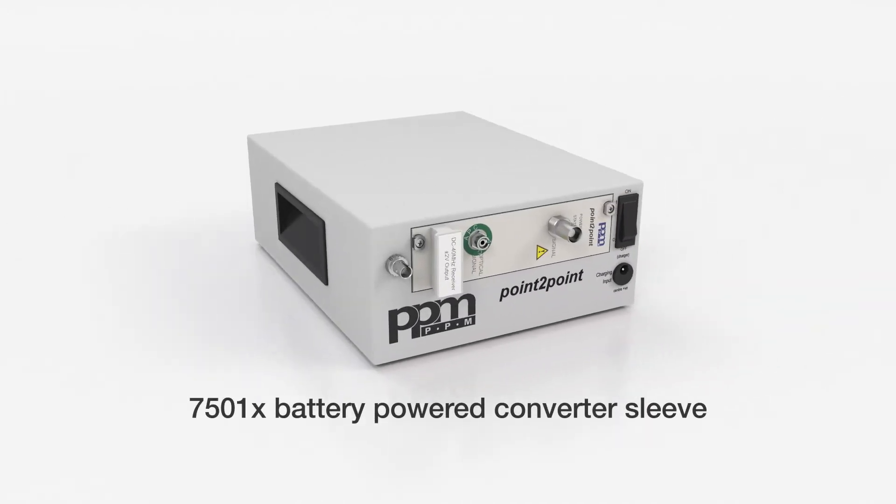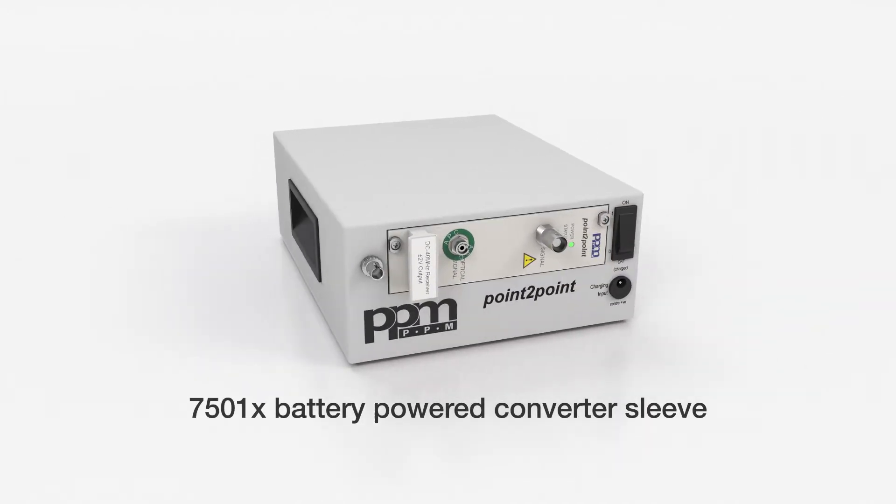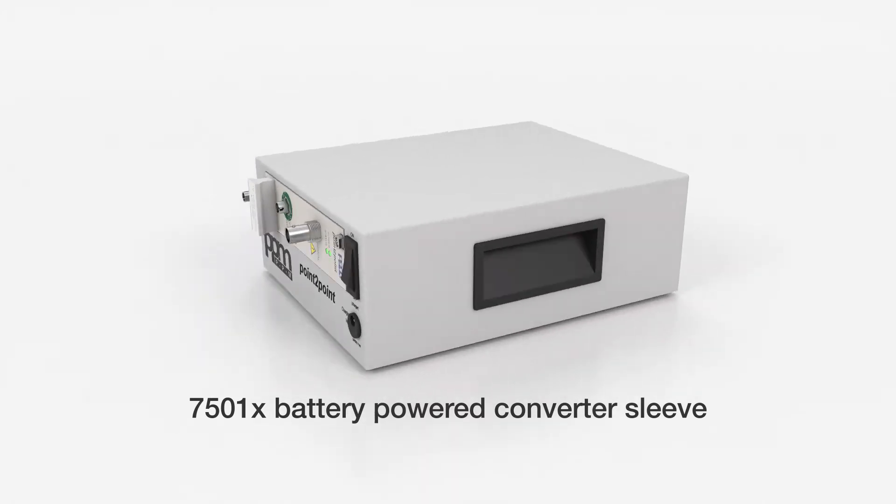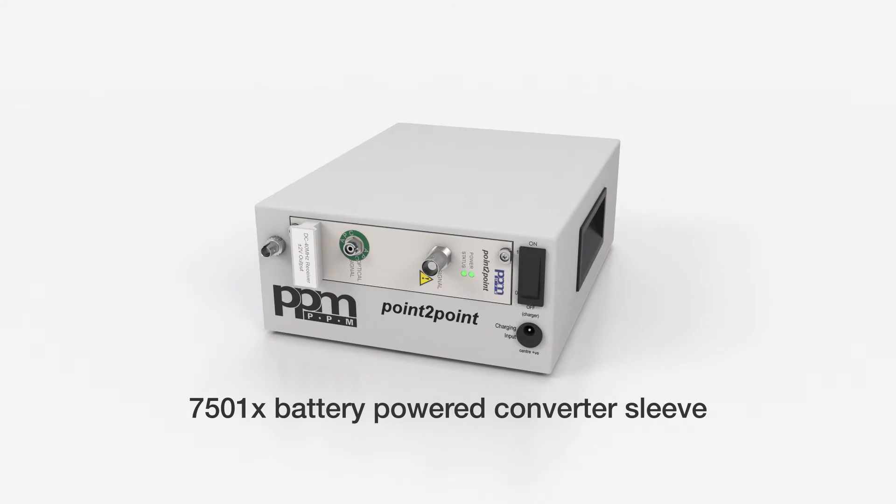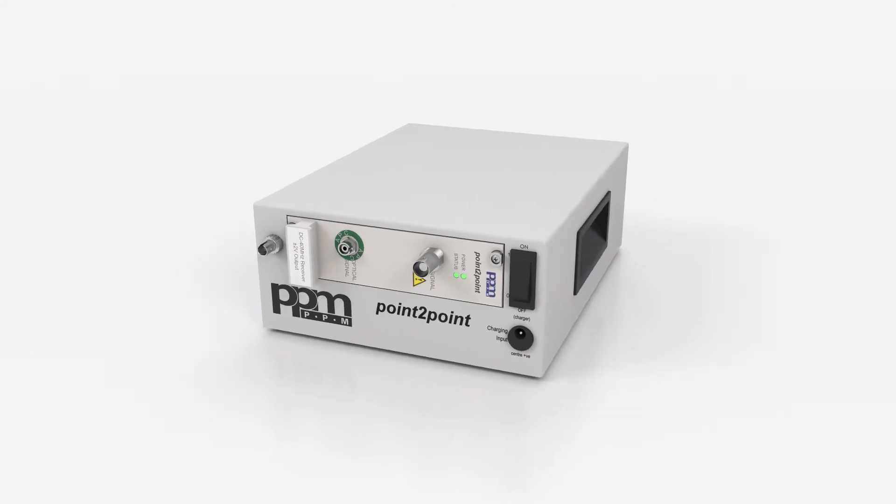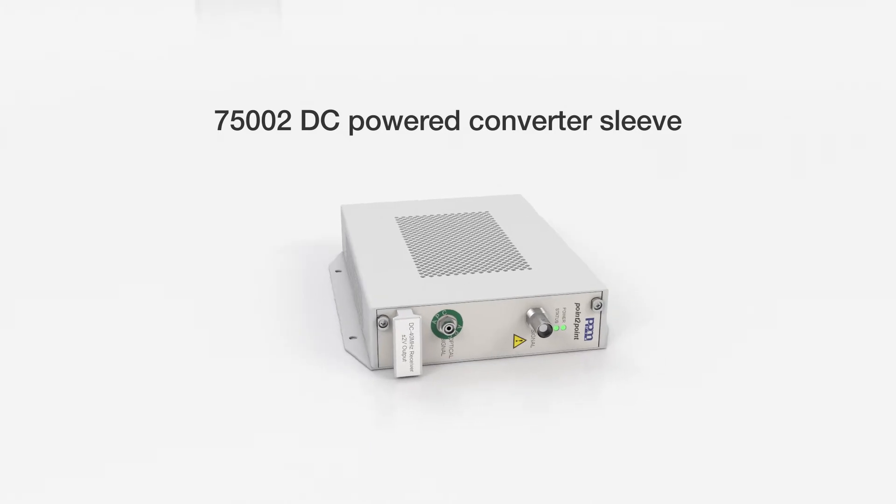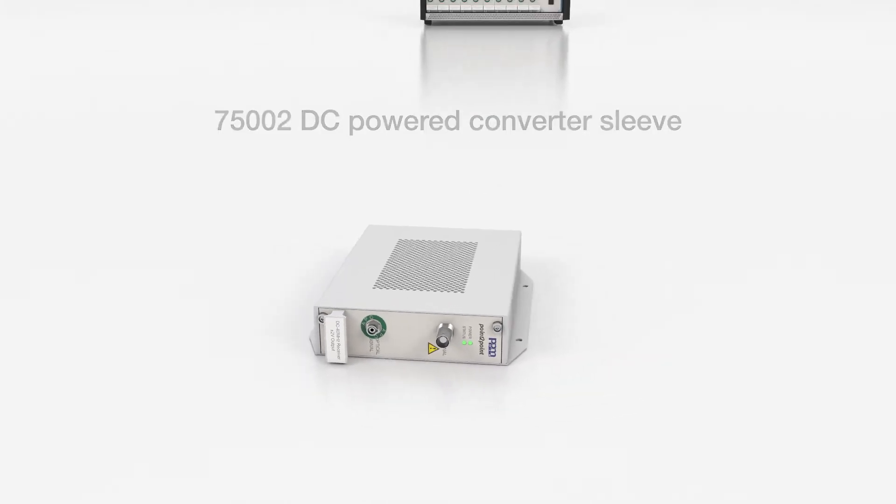A battery power converter sleeve allows a remote receiver module to be operated on battery power. Options include a remote on-off controller switch and 9Ah battery for very long run times. A DC converter sleeve enables a remote module to be powered by a 12V DC source.